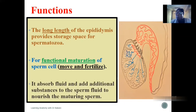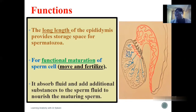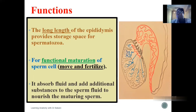This is so because at this region there is fluid absorption and also fluid secretion. This region secretes substances that add to the content of the sperm and also absorbs substances that are not necessary, in order to provide what is required for the sperm to be nourished and to mature functionally — to be able to move and also fertilize an egg.